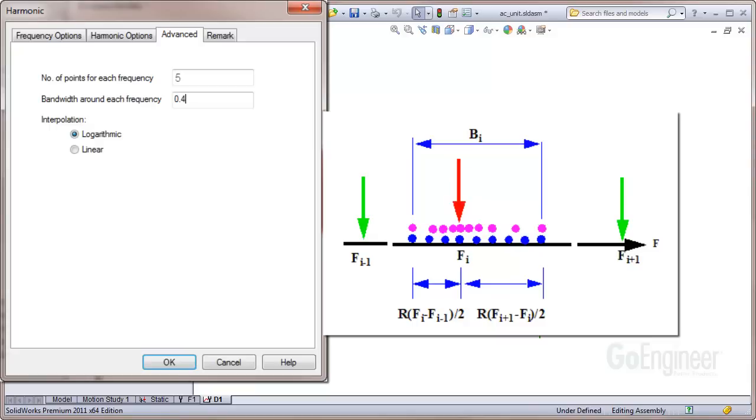If you take half the difference between that frequency and the next, and half the difference between that frequency and the one below, you end up with these values spanning the two blue arrows. The sum of these two values is called the bandwidth around that frequency, shown as Bi.